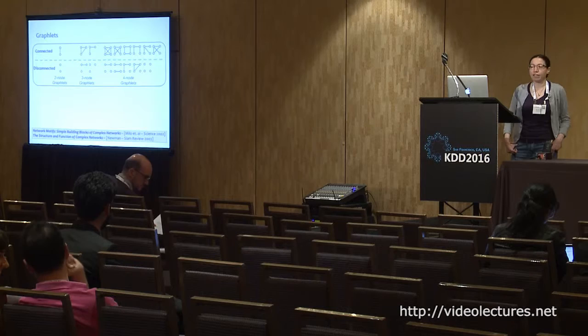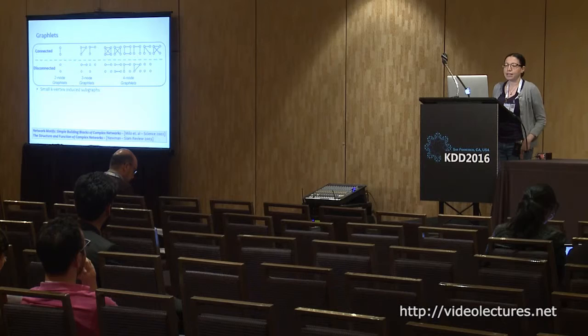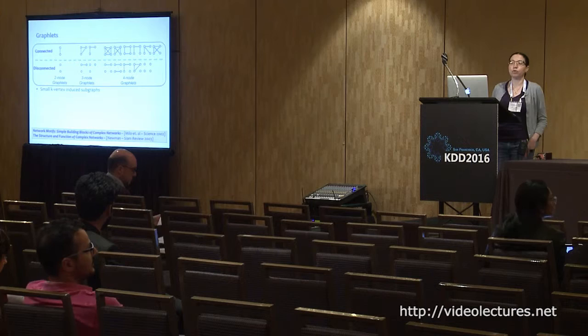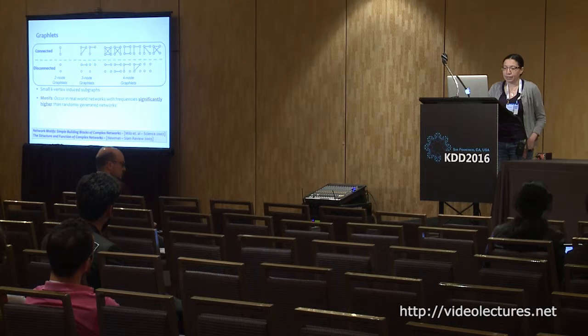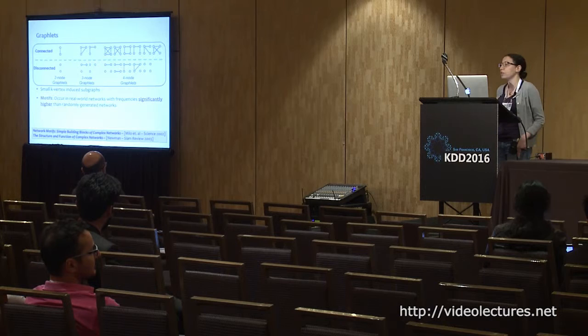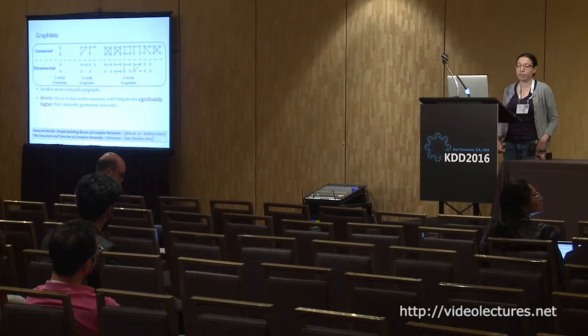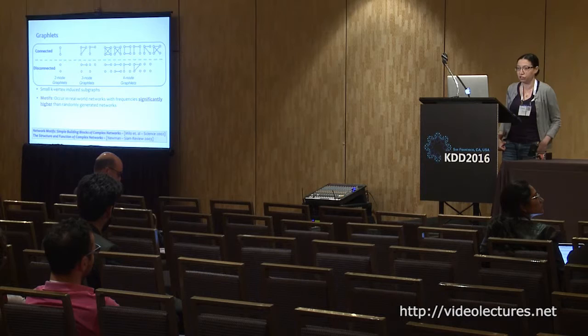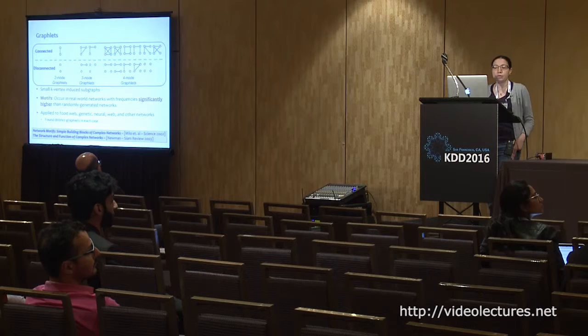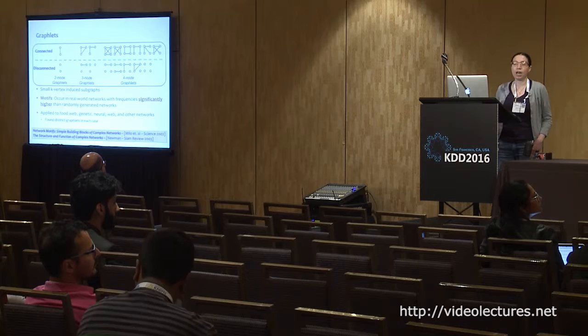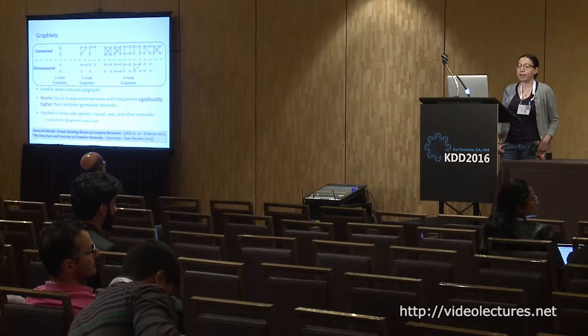Today I'm going to talk about a particular topic in graph mining which is about graphlets. Graphlets are basically defined as any small k-vertex induced subgraph — we refer to graphlets by the full distribution of all possible k-subgraphs. There are related topics called motifs; sometimes the two terms are used interchangeably. Motifs usually refers to those graphlets that occur in real-world networks with higher frequencies than in randomly generated networks. The topic was first introduced by Milo et al., who found these were the simple building blocks of complex networks.